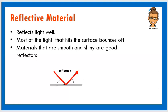So if you shine light on them, the light bounces off of these surfaces, right? Most of the light that you shine on these surfaces bounces off. And these items, these materials tend to be smooth and are shiny, so they're good reflectors.